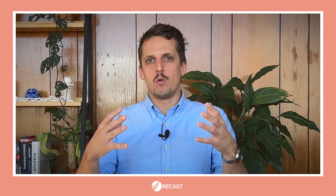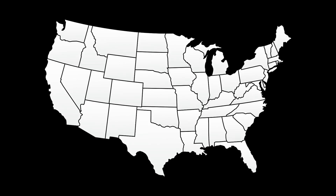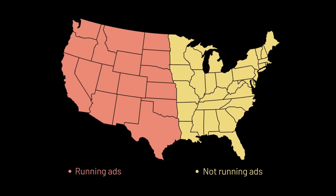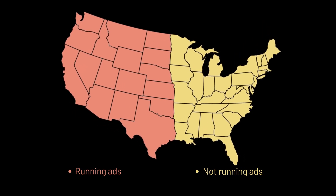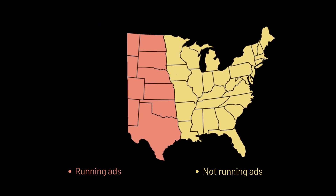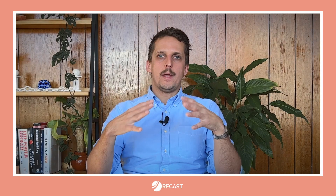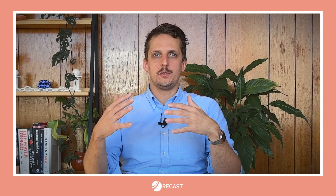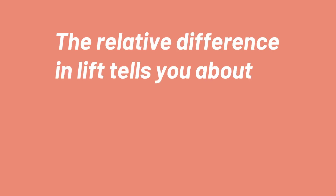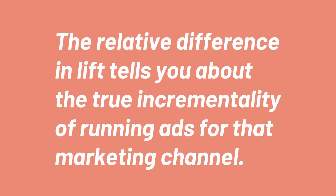In its simplest form, a geographic match market test works by dividing your addressable market into different geographic regions and then running ads for a given marketing channel only in one half or one part of those regions. Then you can compare how much lift in total sales you see in the regions where you ran the ads versus the regions where you didn't. The relative difference in lift tells you about the true incrementality of running ads for that marketing channel.